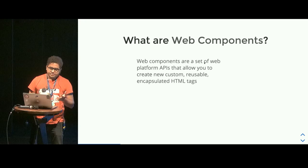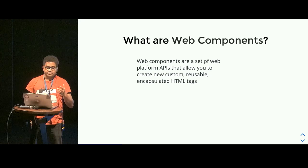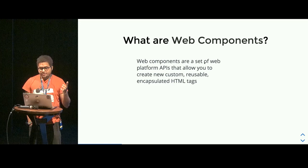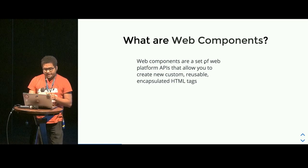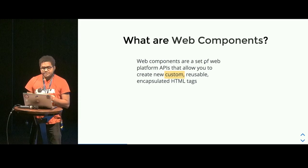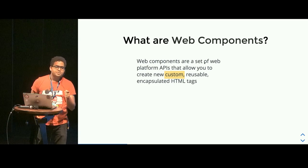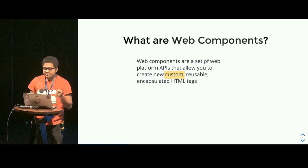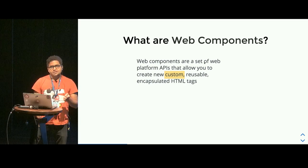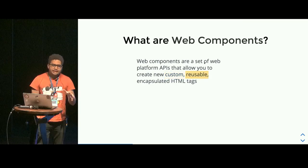Let's get to the definition. The bookish definition: web components are a set of platform APIs which allow you to create new custom, reusable, encapsulated HTML tags. Let's break it down. Custom tags means you can have your own tag which the browser will understand and will do the specific thing you want. It is reusable because you have a JavaScript file which defines how that custom element works fundamentally, and then you use it wherever you want — just include that JavaScript file and the markup.